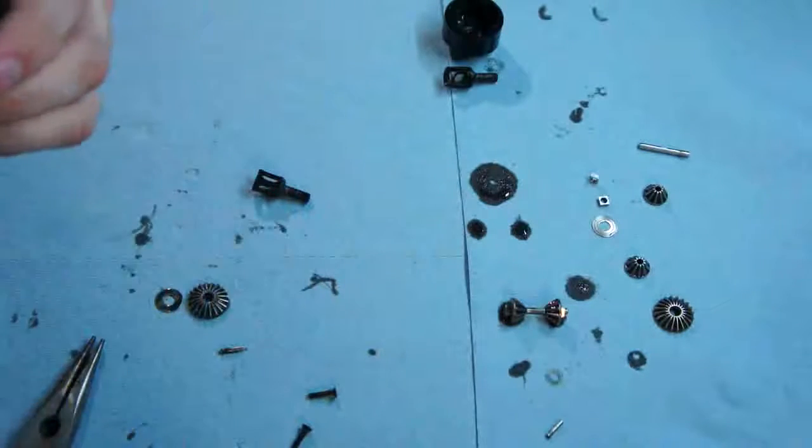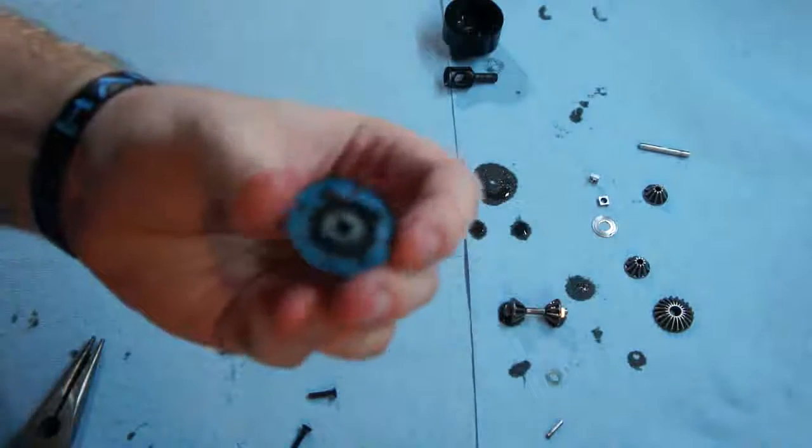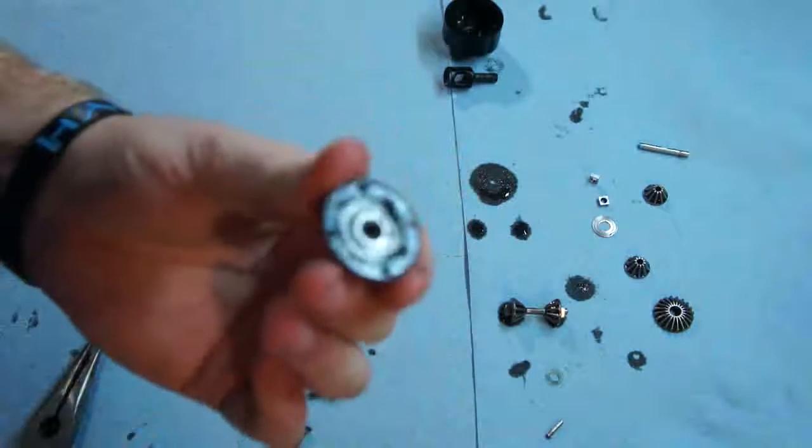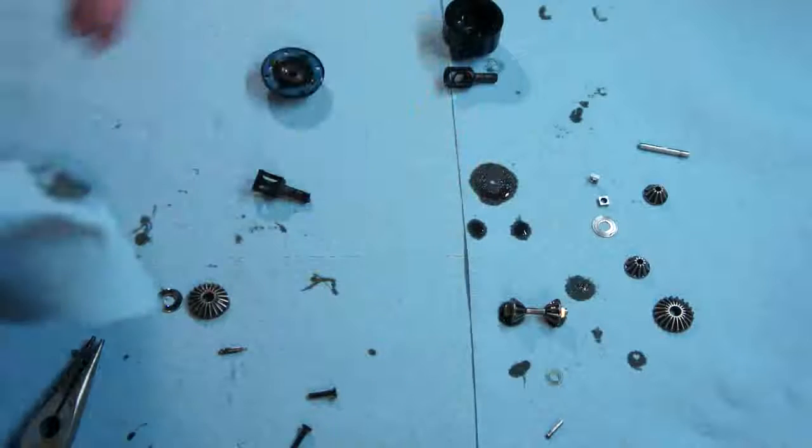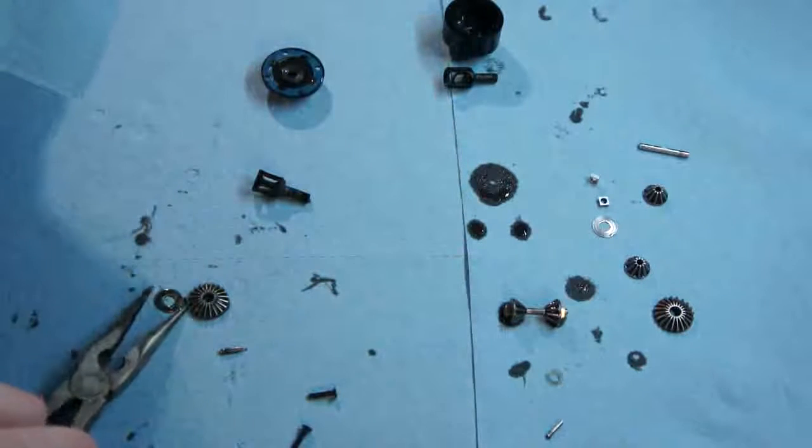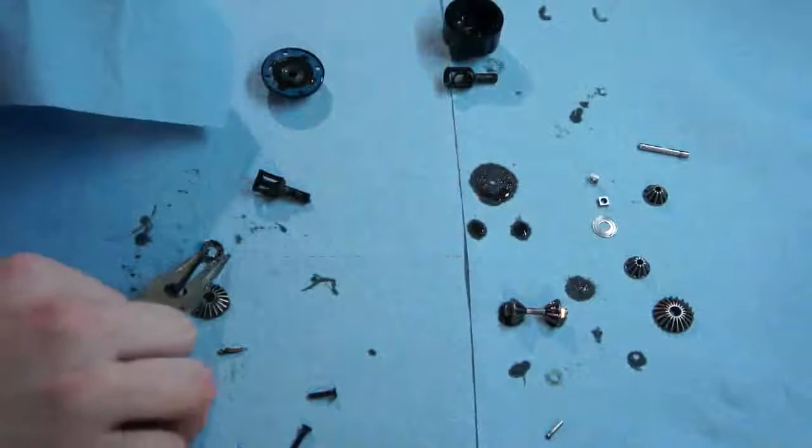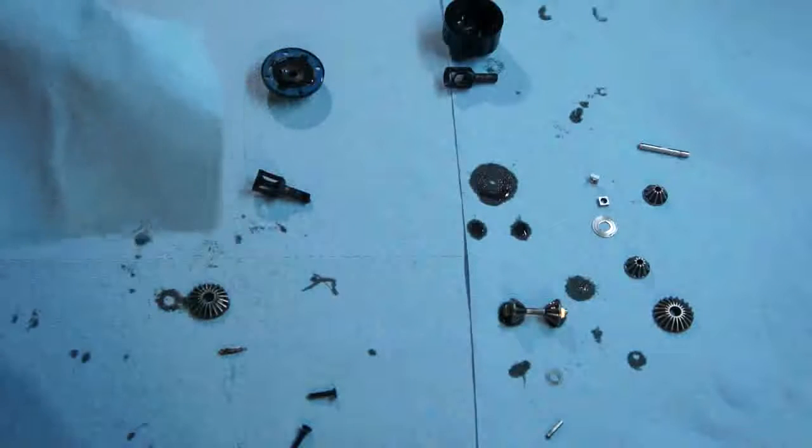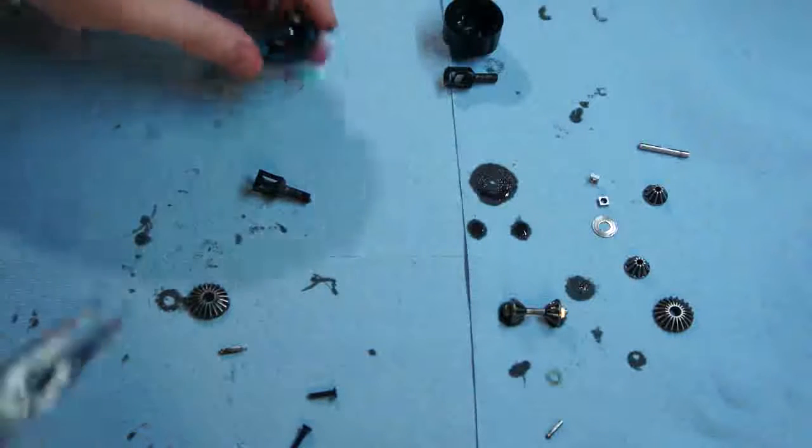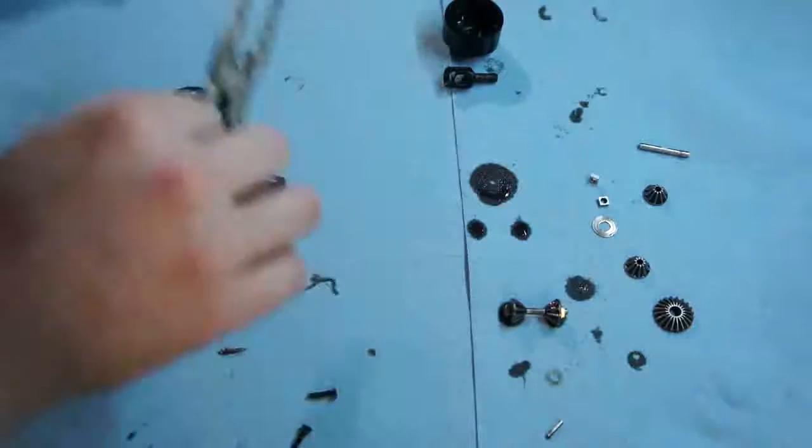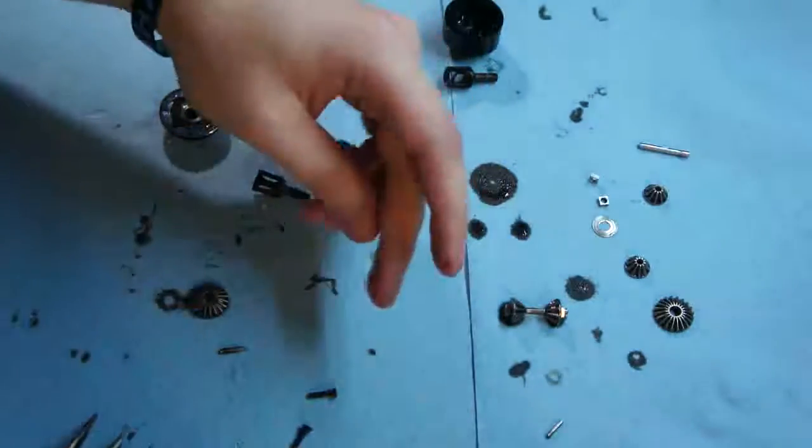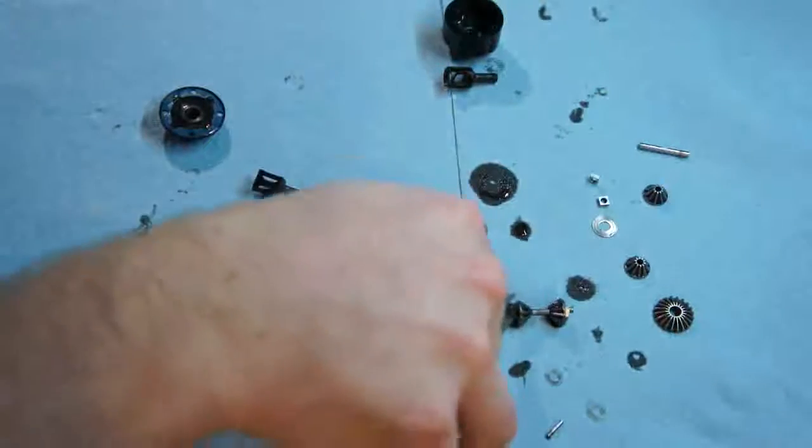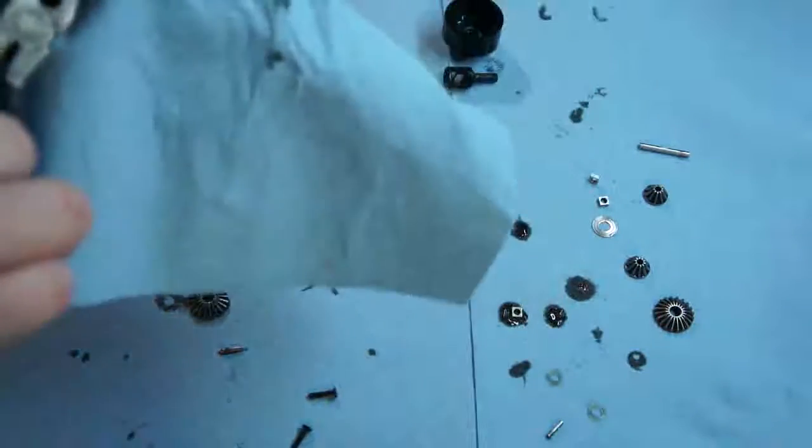Clean all that nasty goop off there. It's a good idea to leave some diff oil on this little blue shim. When you crank this down on the case, it will help seal it a little bit. Makes it sticky. You don't want that totally dry. I need to pull the O-ring out and clean that off.